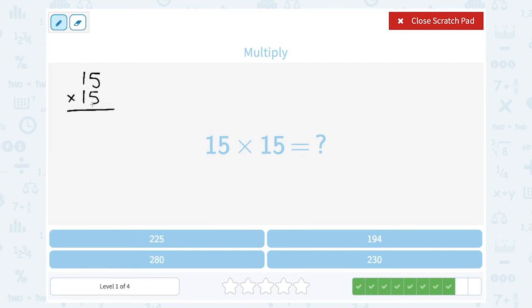So I'm going to first take this five and multiply it by both numbers. So five times five gives me 25. So I'm going to write the five, bring the two over. And then five times one gives me five, plus the two I brought over makes it seven. So five times 15 gave us 75. I'm going to cross this off, so I don't use it for the second part.